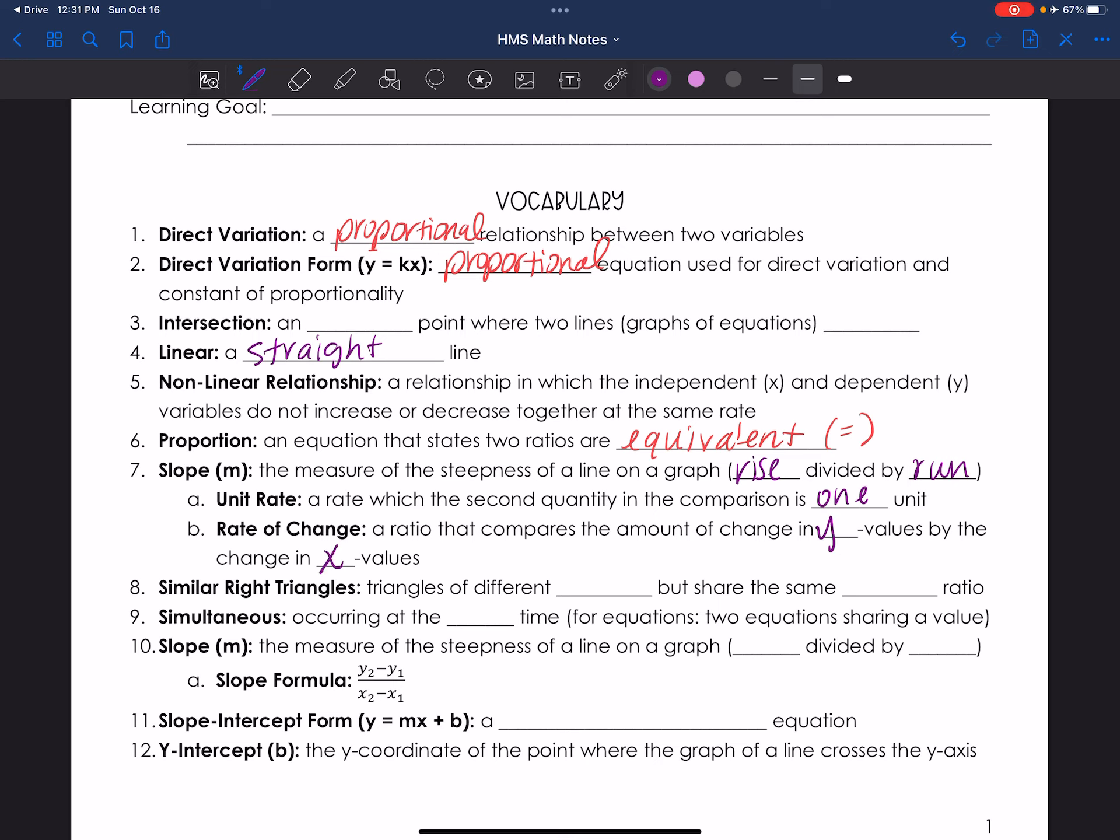Today, we are talking about similar right triangles. Triangles of different sizes but have the same ratio. They have the same slope. If they are dilated by the same number, they're going to have the same slope. Lastly, slope, number 10, is the measure of steepness of a line on a graph, which is Y divided by X, rise divided by run. That's just because it's the same as number 10, if you noticed. It's just like, oops. It's fine. We can write it again. But here's the formula.